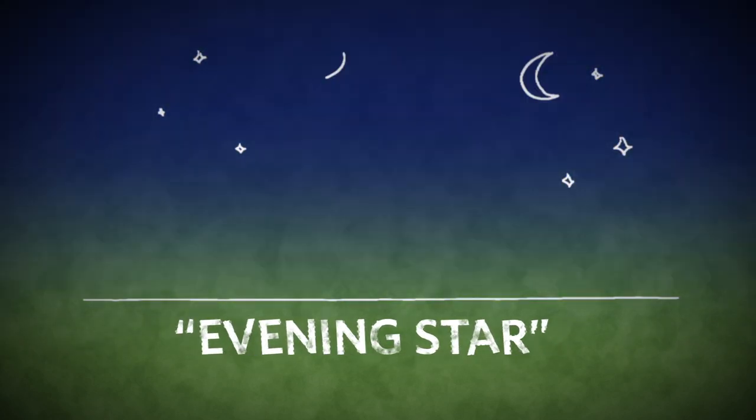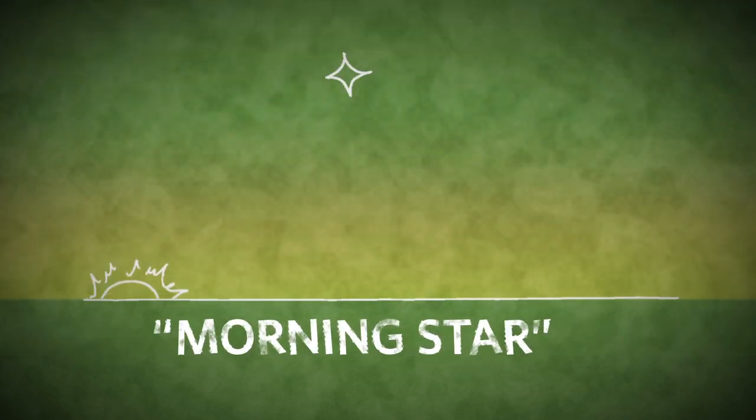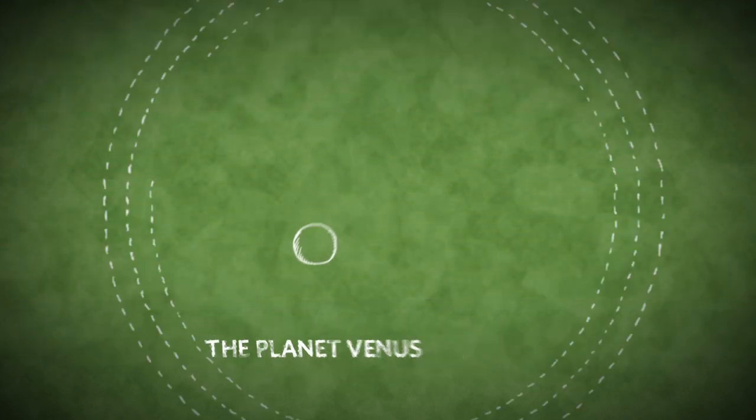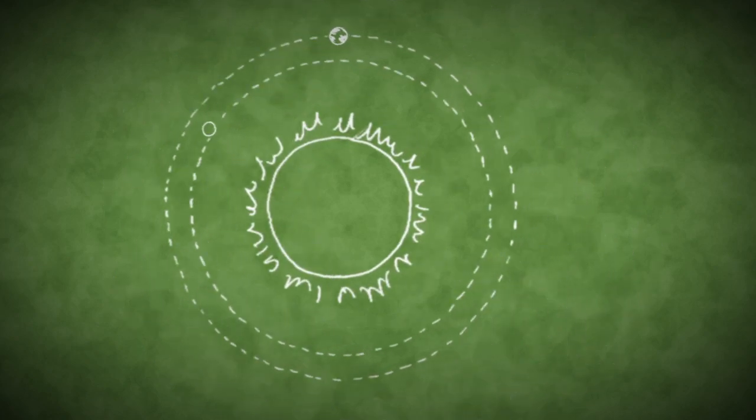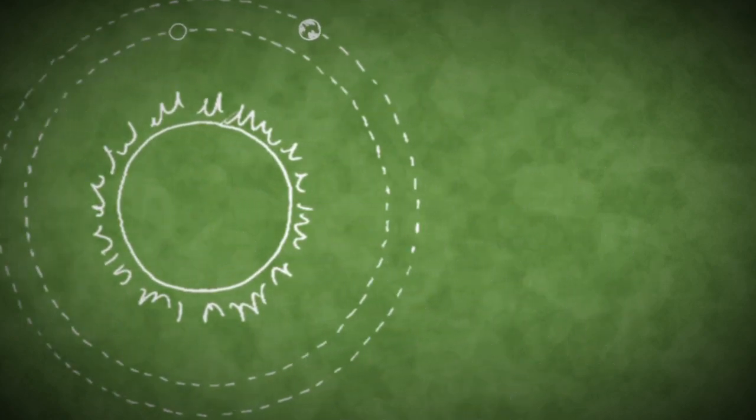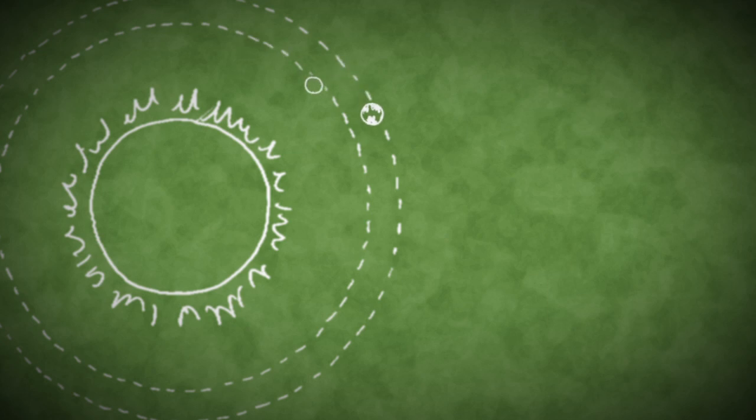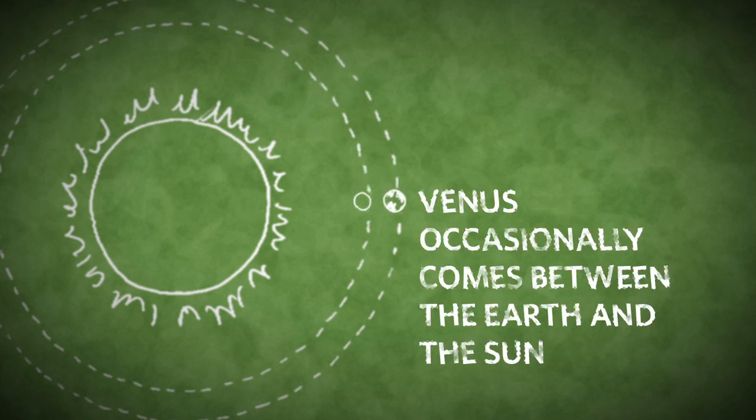It's often called the evening star and sometimes the morning star, but it's better known as the planet Venus. It's one of only two planets that orbit inside Earth's orbit around the Sun, and that means it can occasionally come between our planet and our star.